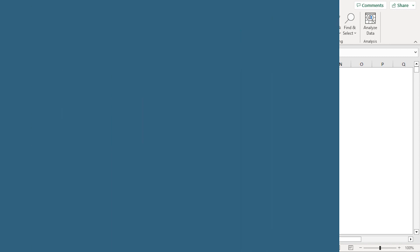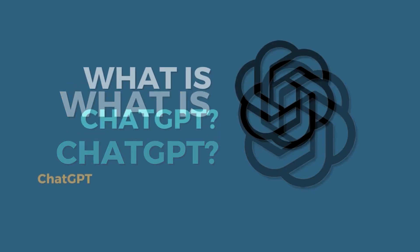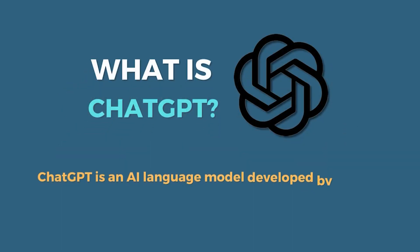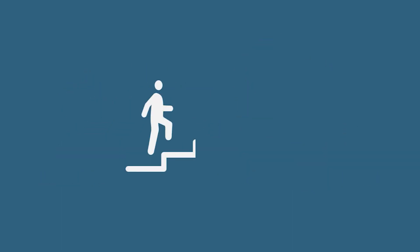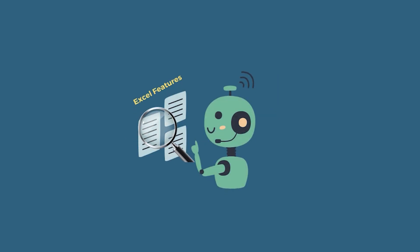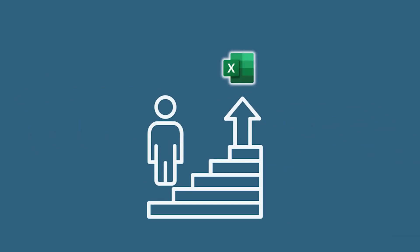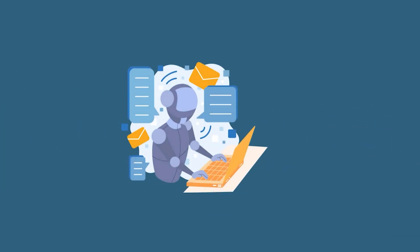Now you may be wondering, what is ChatGPT? ChatGPT is an AI language model developed by OpenAI. If you are a beginner in Excel, ChatGPT can guide you through Excel's features and formulas. In case you are already familiar with Excel, then ChatGPT can get your work done in no time.